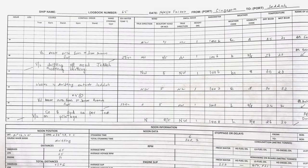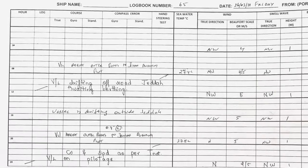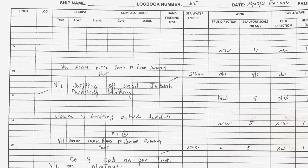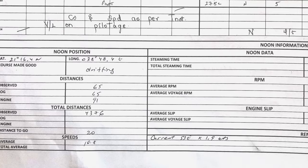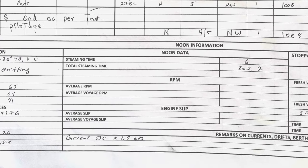Let's quickly check out another log book format that you will meet even more often — it's actually almost the same thing, even simpler. Courses here include the true course (course on the chart), gyro compass heading, and magnetic compass heading. You might also notice that you have to write compass errors. For the hand steering test, you have to write the time when you did this — usually it is done at the beginning of the watch. In the next video we'll see how to fill up noon information in the deck log book.